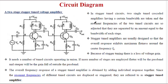Coming to the circuit diagram of the stagger tuned amplifier — this is a circuit diagram of a two-stage stagger tuned voltage amplifier. If you observe carefully, each stage is a single tuned circuit and these two stages are coupled with a capacitor. Each circuit is tuned to its resonant frequency, and those resonant frequencies of the two tuned circuits are adjusted so that they are separated by an amount equal to the bandwidth of each stage.